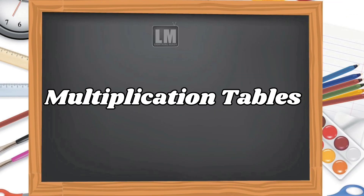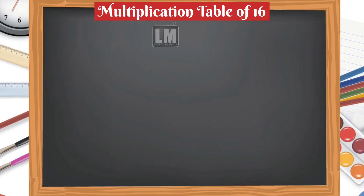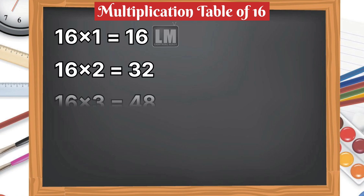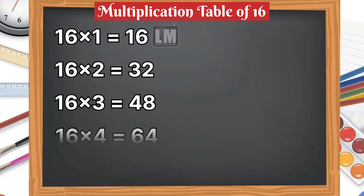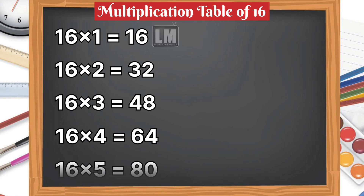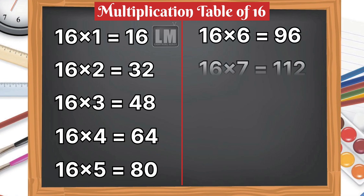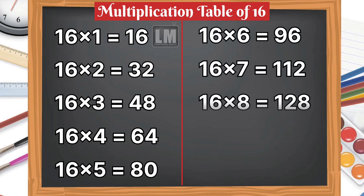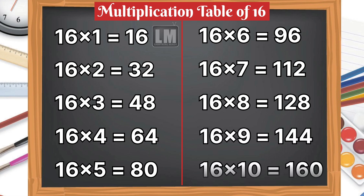Let's learn multiplication table of 16. 16 1s are 16, 16 2s are 32, 16 3s are 48, 16 4s are 64, 16 5s are 80, 16 6s are 96, 16 7s are 112, 16 8s are 128, 16 9s are 144, 16 10s are 160.